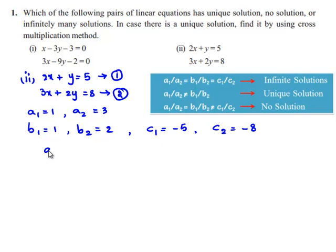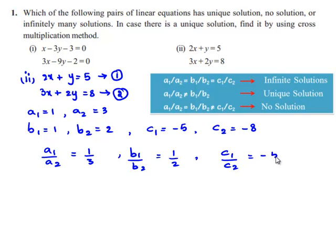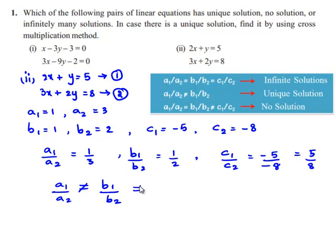So, a1 by a2 is nothing but 1 by 3, b1 by b2 is equal to 1 by 2, and c1 by c2 is minus 5 by minus 8, which is nothing but 5 by 8. So we can say that a1 by a2 is not equal to b1 by b2, which is not equal to c1 by c2.